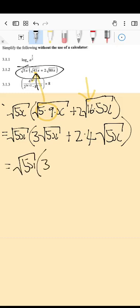So it is square root of 5x that is outside. Then you have your 3 square root 5x plus, so the 2 times 4 gives you the 8, square root of 5x.